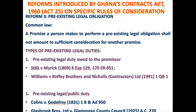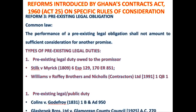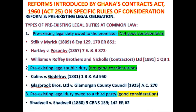So the example I gave relates to a pre-existing legal obligation owed to the promisor. Under the common law, when the lecturer performs that obligation of going to lecture — what he was already bound to do — that performance of the pre-existing legal obligation shall not amount to good consideration that will support the enforcement of a promise. There are different types of pre-existing legal obligations: it could be a pre-existing legal obligation owed to the promisor, as in this example.